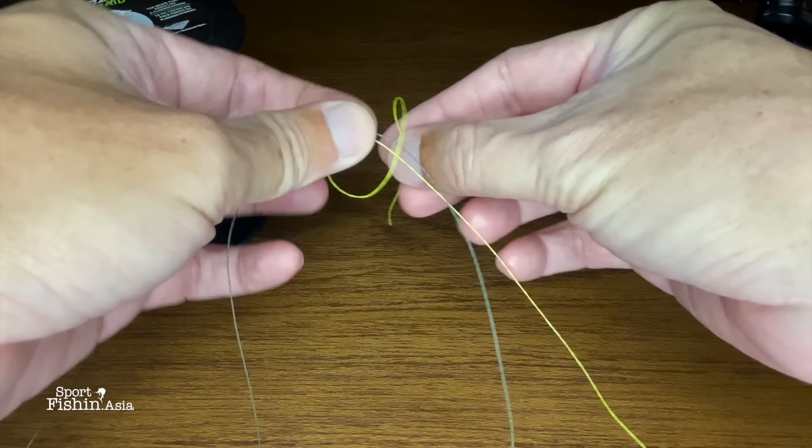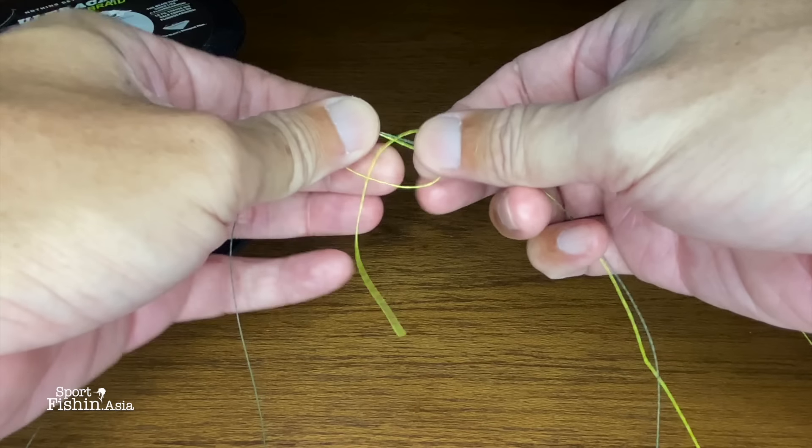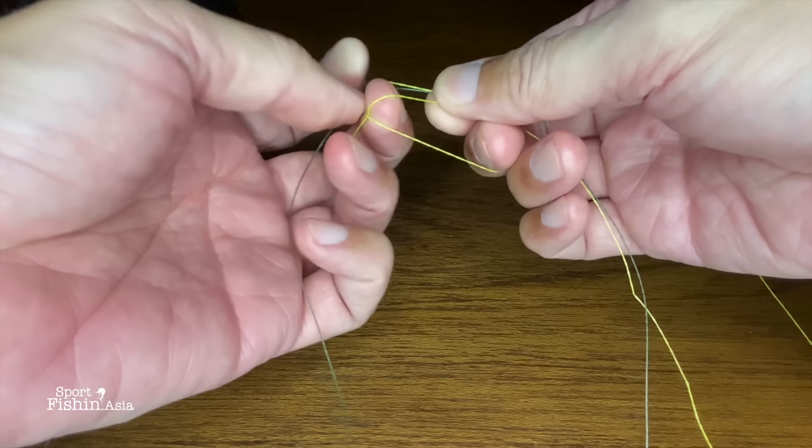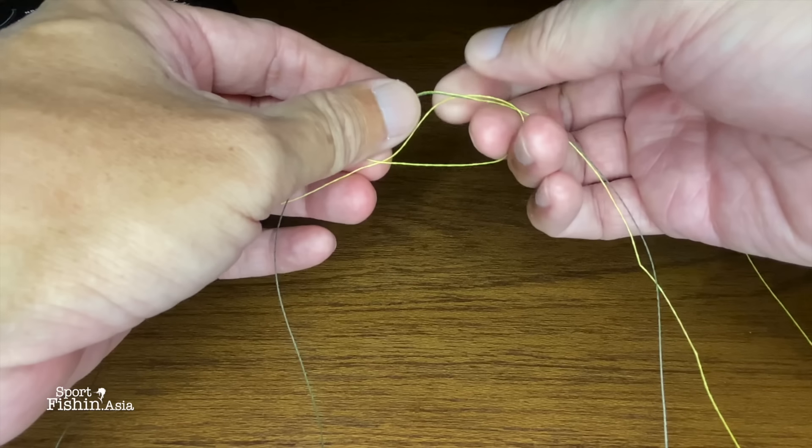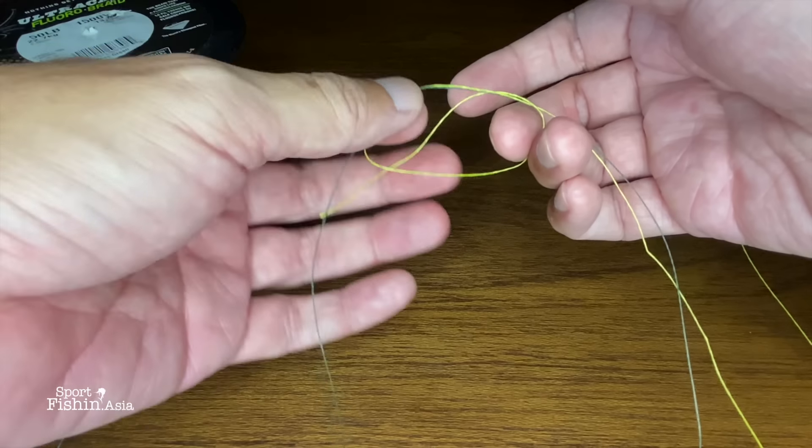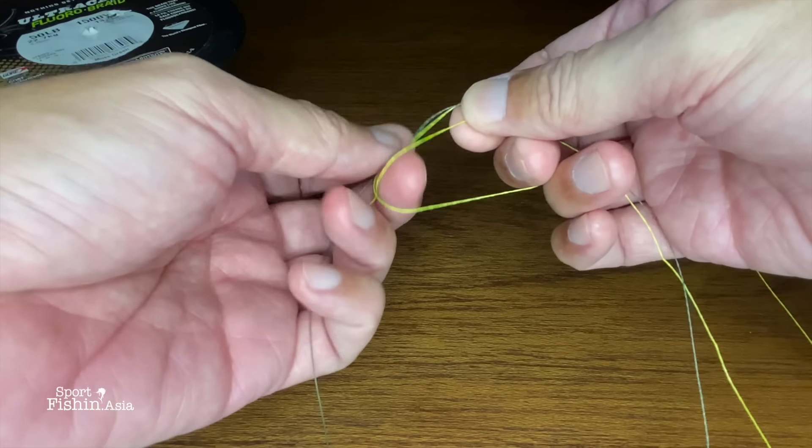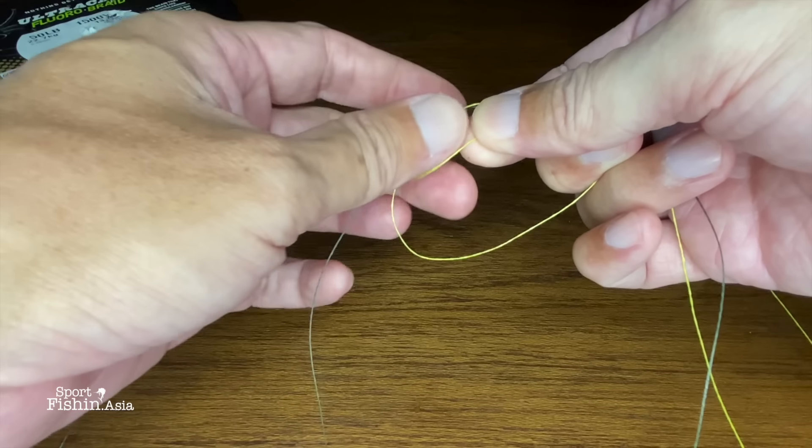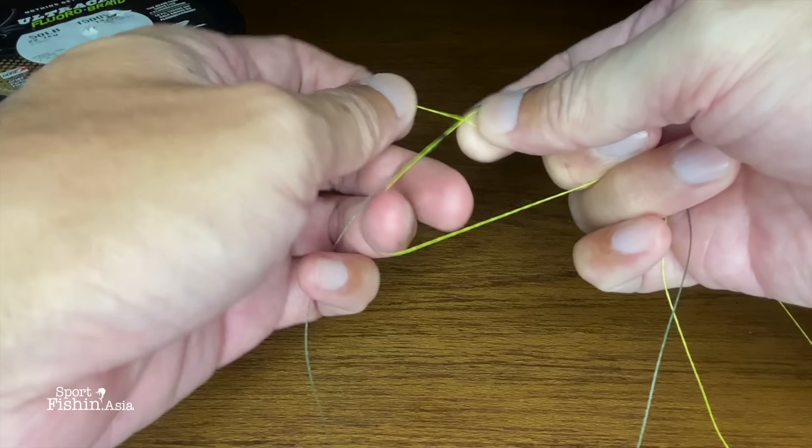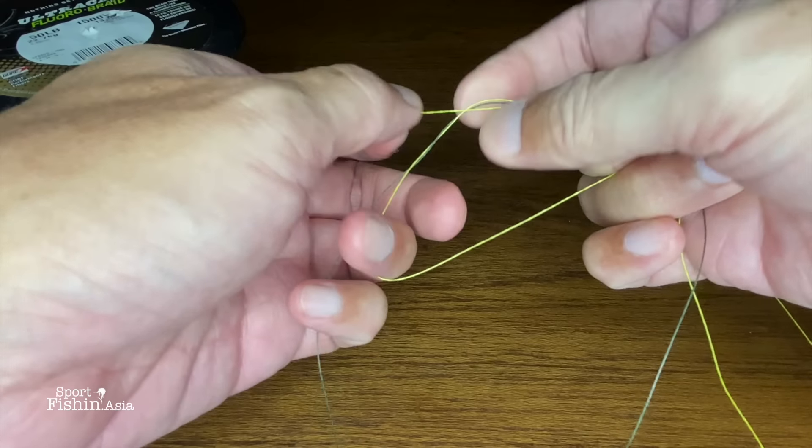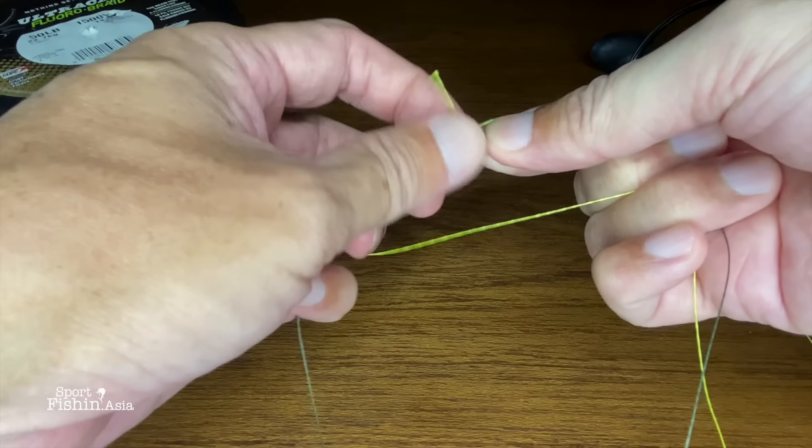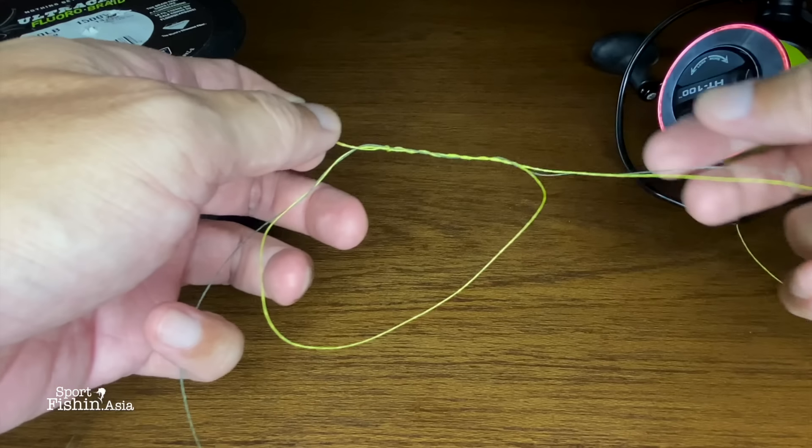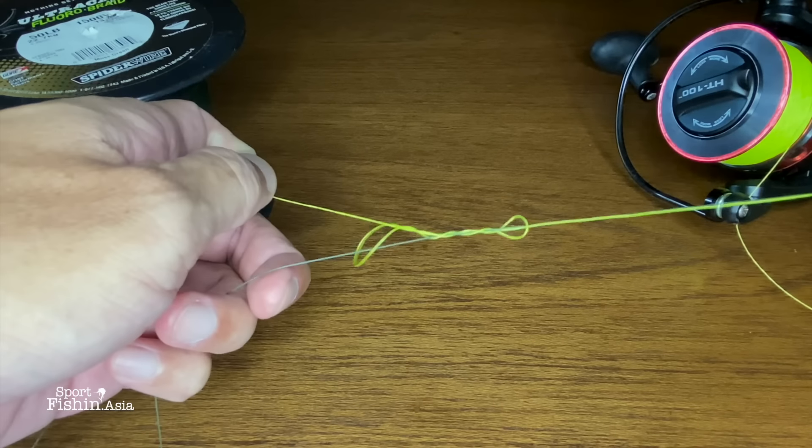Make a loop—if you have more line this will be easier. Wrap around both lines, go through the loop: one, two, three, four, five. And you pull it tight.